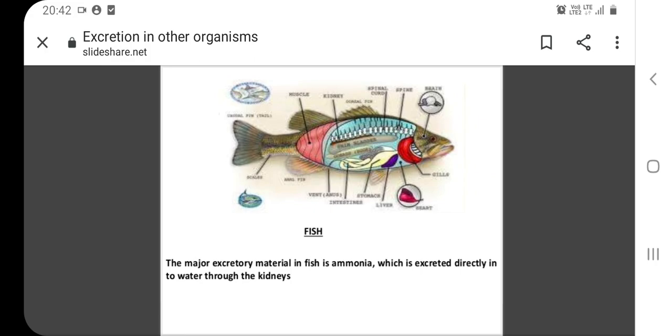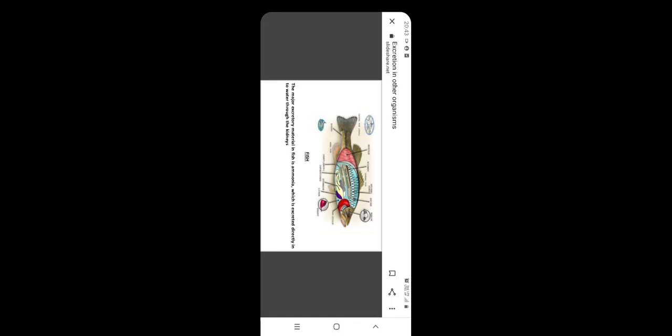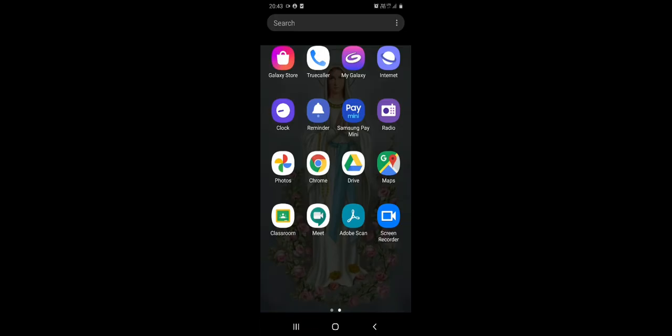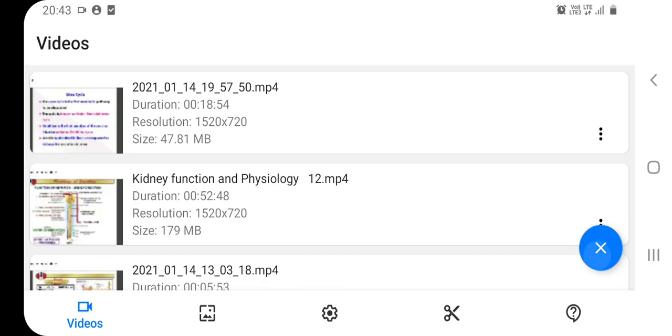In fishes, the excretory product is ammonia, which is excreted directly in the water by the gills or through the kidney.